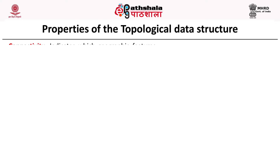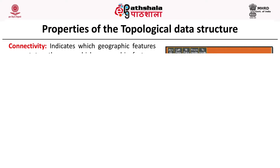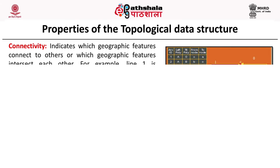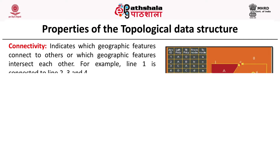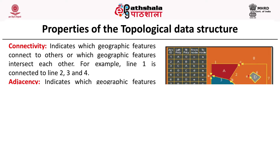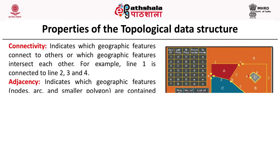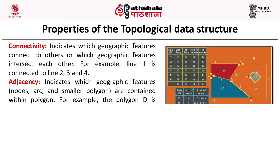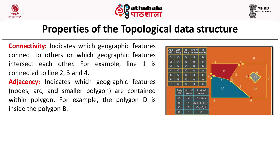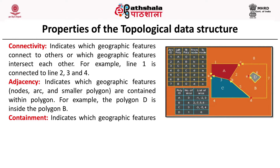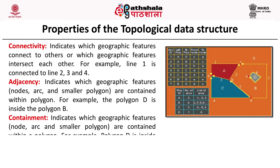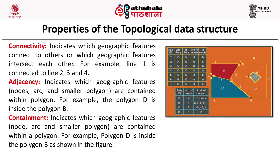The topological data structure has three key properties. The first is connectivity, which indicates which geographical features connect to or intersect each other — for example, line 1 is connected to lines 2, 3 and 4. The second property is adjacency, which indicates which geographic features — nodes, arcs and polygons — are adjacent to one another. The third property is containment, which indicates which geographic features such as nodes, arcs or smaller polygons are contained within a polygon — for example, polygon D is inside polygon B.